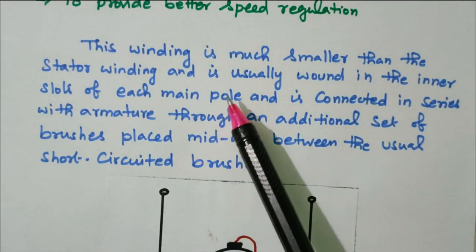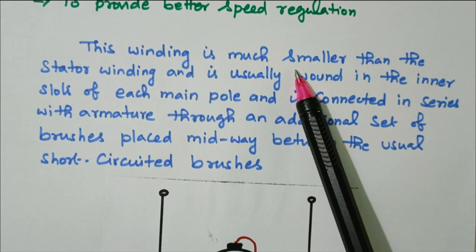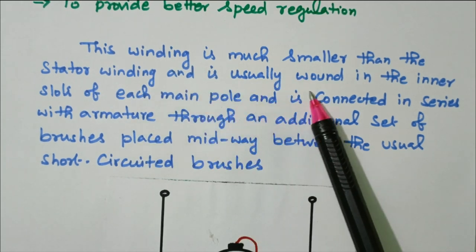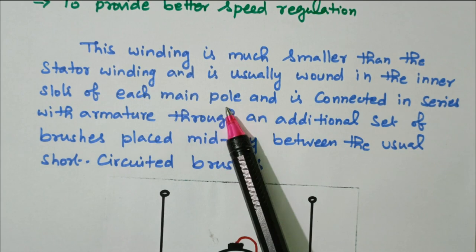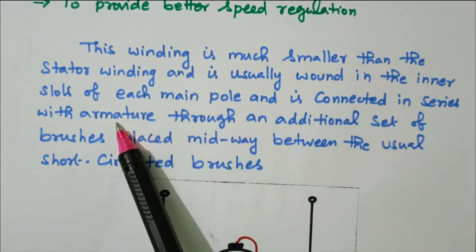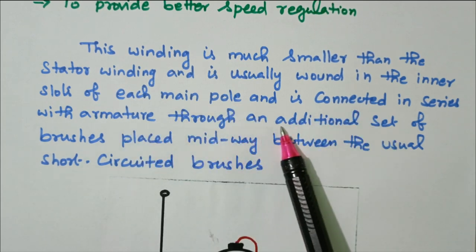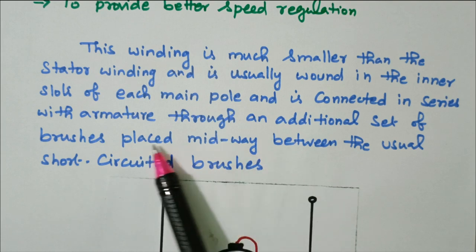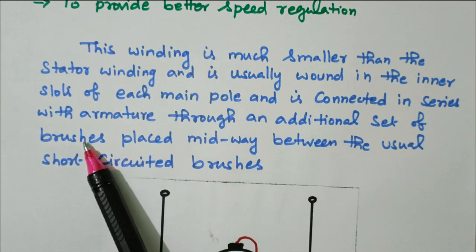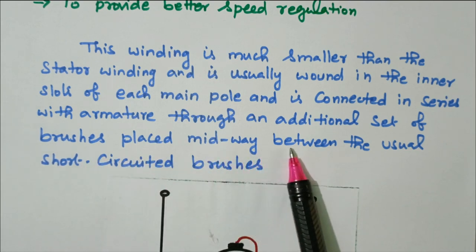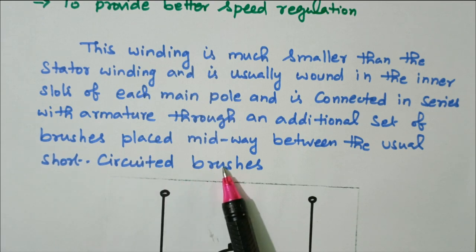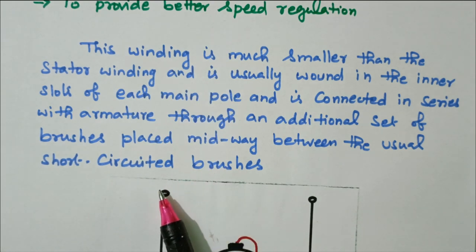This compensating winding is much smaller than the stator winding and is usually wound in the inner slot of the main poles. It is connected in series with the armature through an additional set of brushes. Already two sets of brushes are present, and this compensating winding is placed midway between the usual short-circuited brushes.